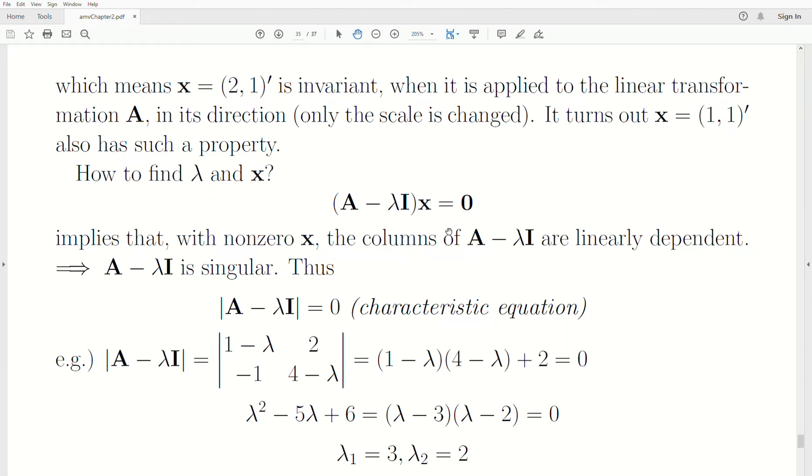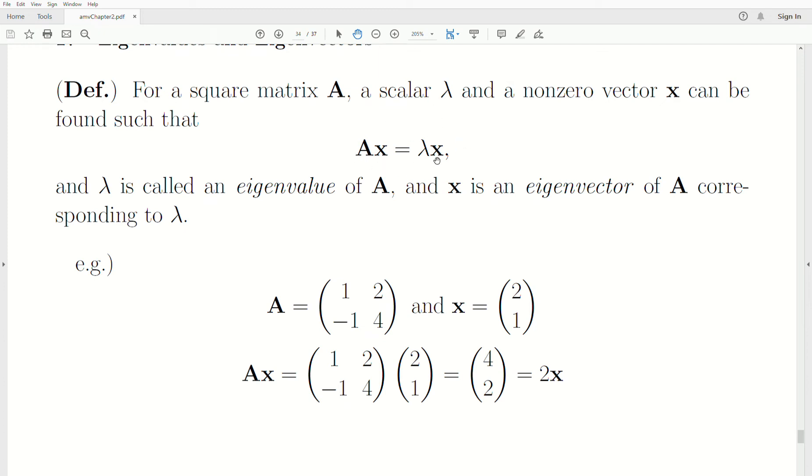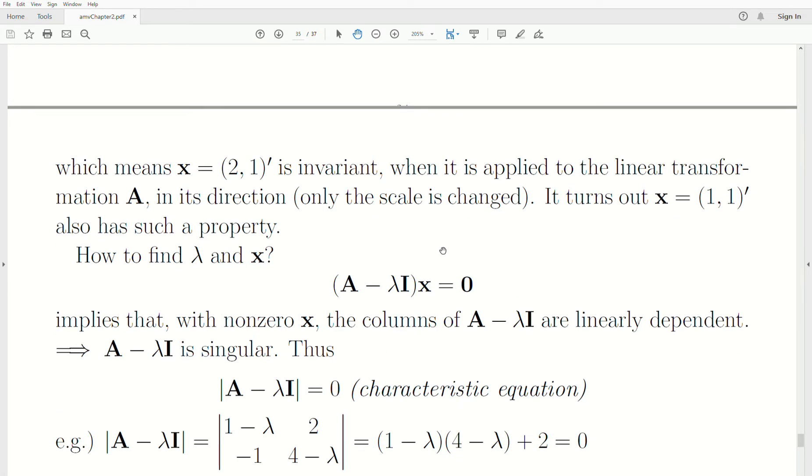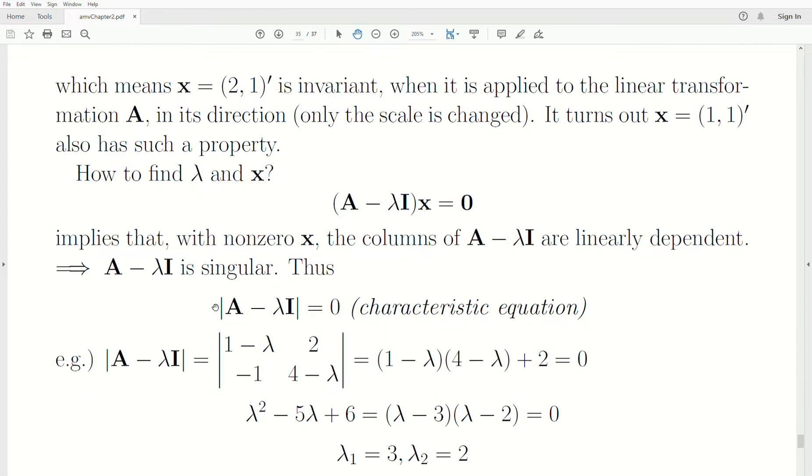How do you find them? If you take this equation and subtract that to the other side so it equals zero, and then factor out an x, you get this equation. That says that if we take a non-zero x times this matrix equals zero, it says these columns are linearly dependent, meaning one of the columns can be written as a linear combination of the other columns. That's called singular. If it's singular, it means its determinant is zero. This is called the characteristic equation.